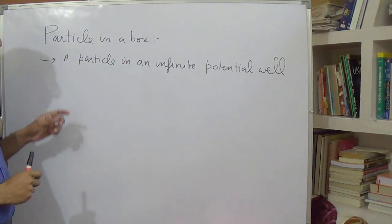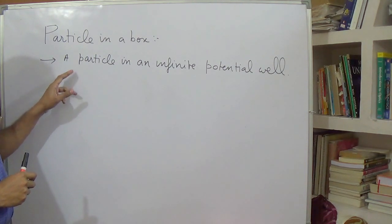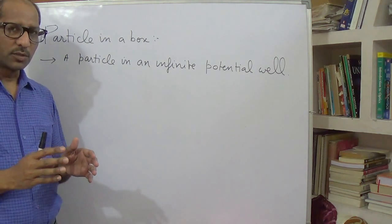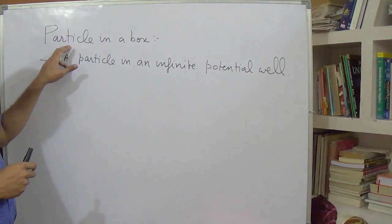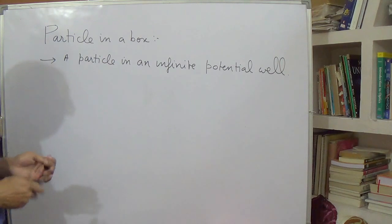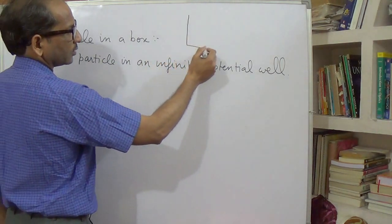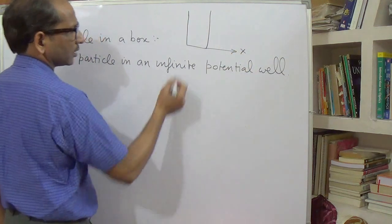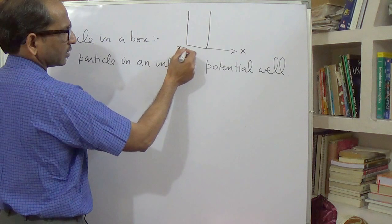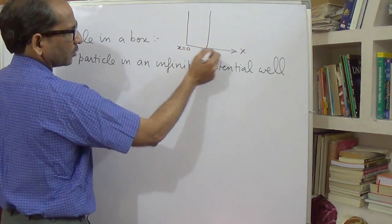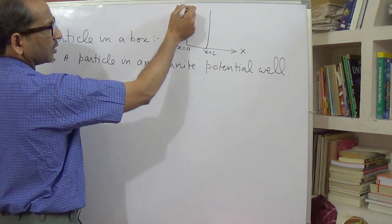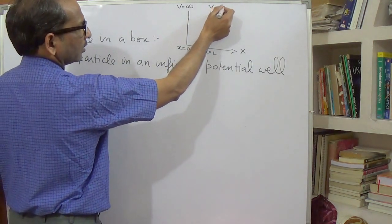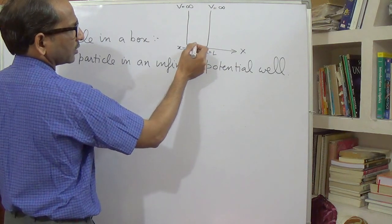Today's topic is particle in a box, sometimes called a particle in an infinite potential well. This is an application of the Schrödinger equation where a particle is trapped in a potential well. We have this one-dimensional potential well along the x-axis, with dimension from x=0 to x=L, where the potential P is infinite at x=0 and x=L, and the particle is inside this well.